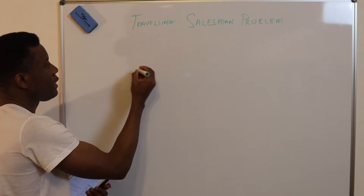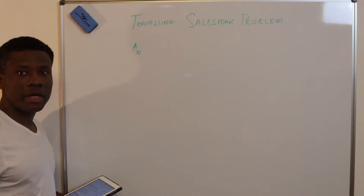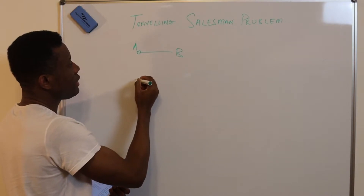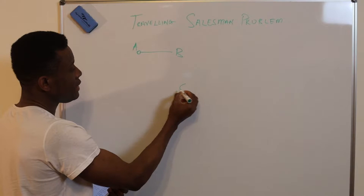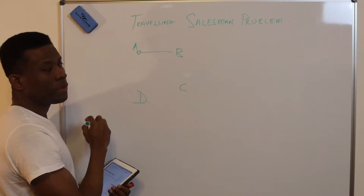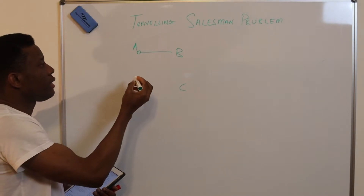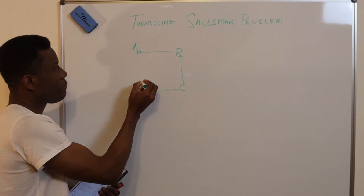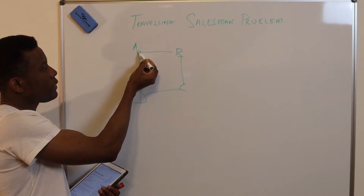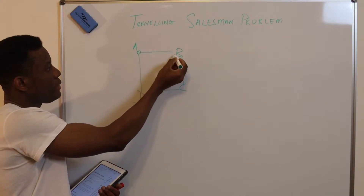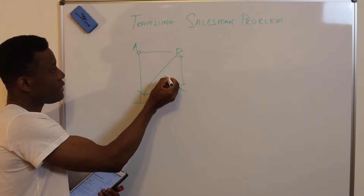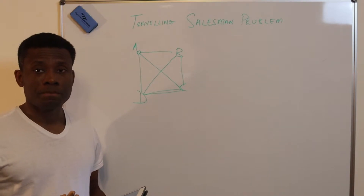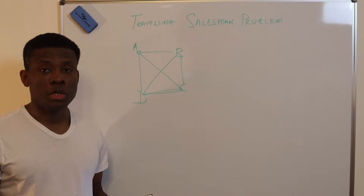So the salesman is at point A and he's meant to deliver items to point B, point C, and point D. He can go from A to B, B to C, C to D, and back to A. He can also go A to B, B to D, D to C, and back to A. The objective of the Traveling Salesman Problem is to find the shortest route.